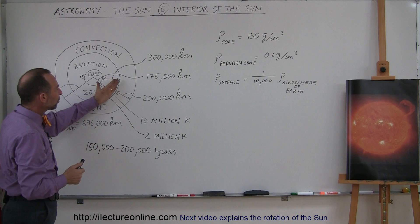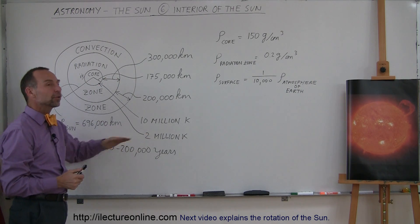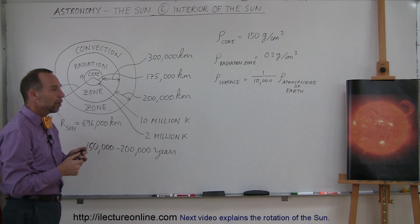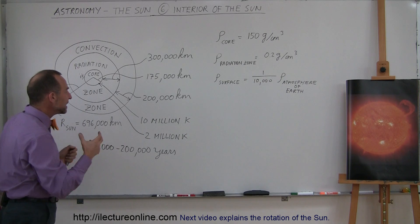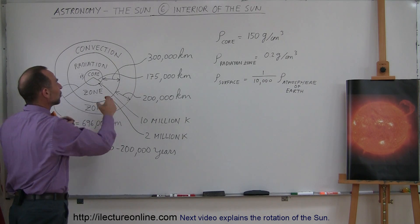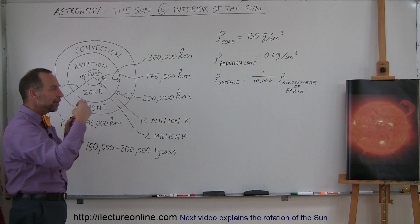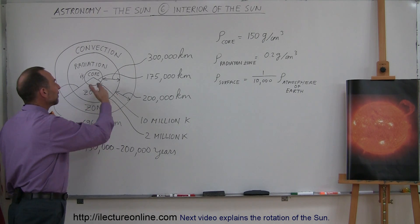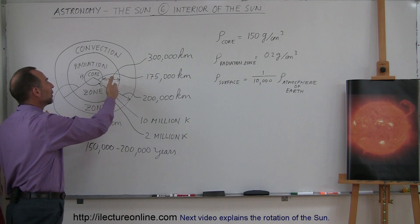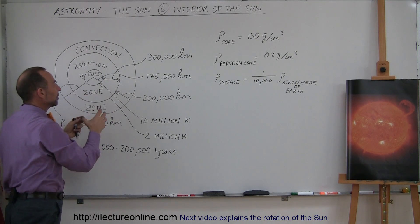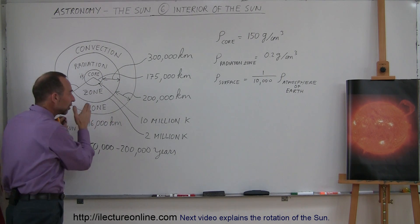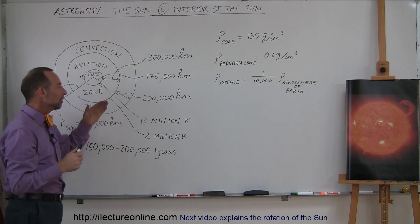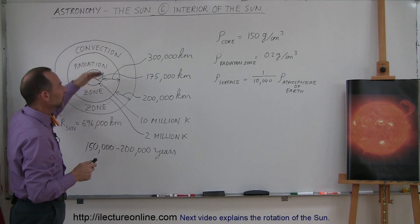Now, what happens at this point where the temperature drops to about 2 million degrees? It reaches a point where some of the heavy materials in the Sun actually attract enough electrons to the point where they actually become atoms. And then, instead of having a pure plasma here, we now have a different kind of material where the radiation can make it through a little bit easier. And this then becomes what we call the convection zone.